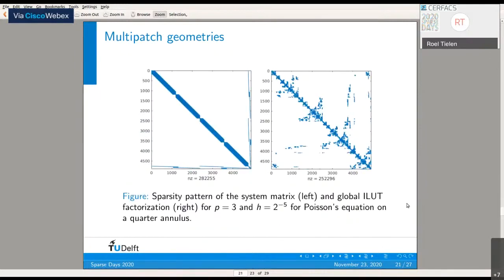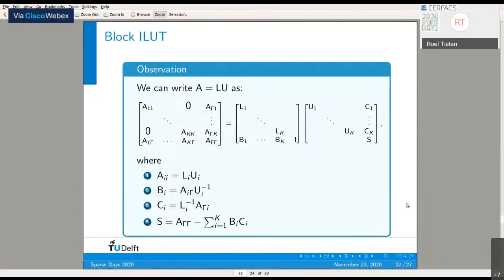On this slide, on the left you see the stiffness matrix for a Poisson equation consisting of four patches—you see the four blocks. On the right, you see the global ILU(T) factorization. We're going to try to make use of this block structure to come up with a block ILU(T) smoother. This starts with the observation that we can write our block diagonal matrix with interface entries as the multiplication of two other matrices.